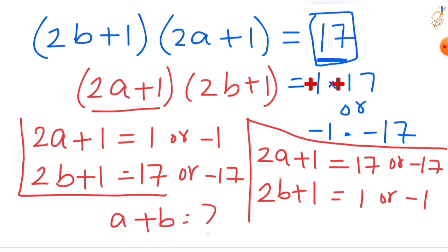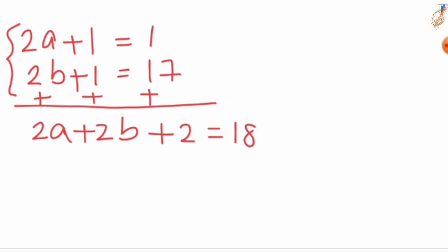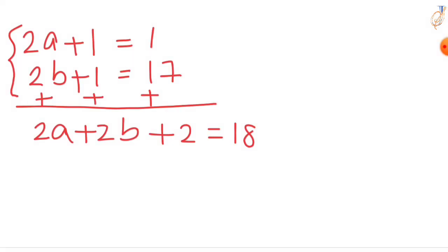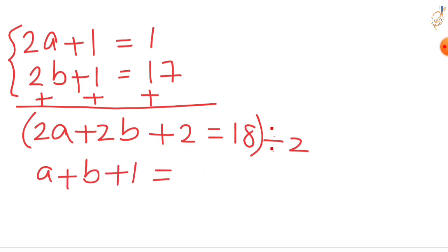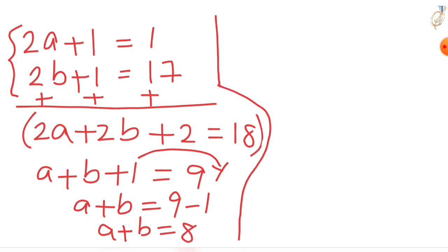Taking the positive values first: add (2a + 1) + (2b + 1) = 1 + 17 = 18. This gives 2a + 2b + 2 = 18. Dividing by 2: a + b + 1 = 9, so a + b = 8.